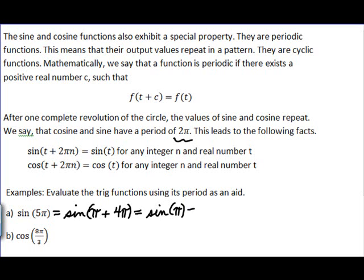So to find the sine of π, remember on the unit circle, π is 180 degrees, right? And that point there is negative 1, 0. So the sine of π is 0.